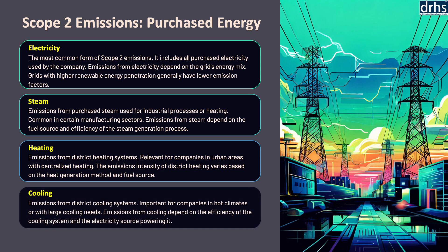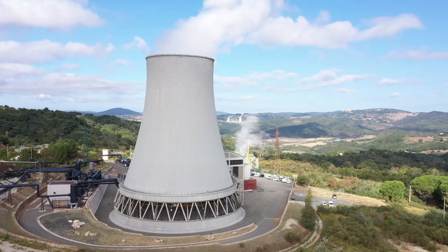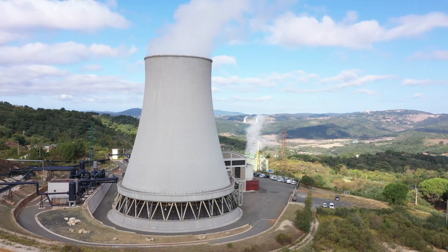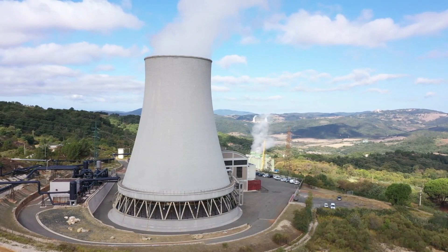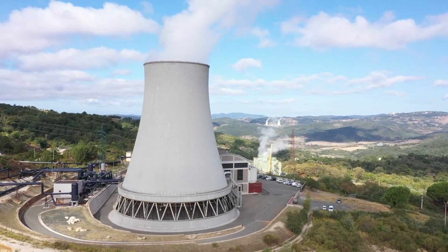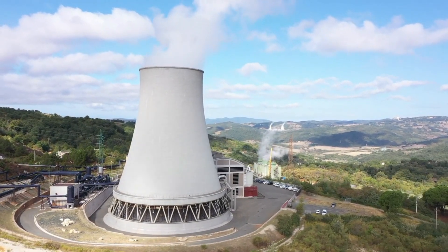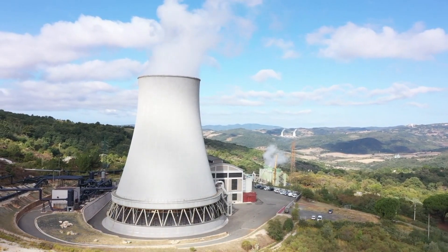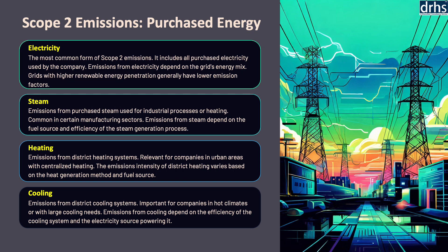The fourth source is cooling. Cooling, especially in the form of chilled water or air conditioning, also contributes to scope 2 emissions. The production of cooling energy typically involves electricity consumption, which, depending on the energy source, can have a high carbon footprint. To reduce these emissions, organizations can invest in energy-efficient cooling technology, optimize cooling processes, and consider alternative cooling methods such as evaporative cooling or thermal energy storage. The use of renewable energy to power cooling systems can further mitigate scope 2 emissions.